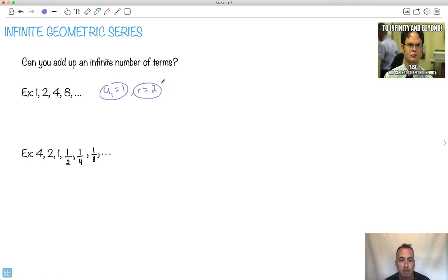If I wanted to add up all the different terms, I wanted to do S infinity, how would I do that? Well, if I keep adding up all the terms, 1 plus 2 plus 4 plus 8 plus 16 plus 32, the answer would just be infinity. The more terms I add up, the bigger the number would be. So we say that this series diverges. This series diverges means it does not reach one specific value. So this is not going to be helpful. We cannot add up the infinite number of terms.